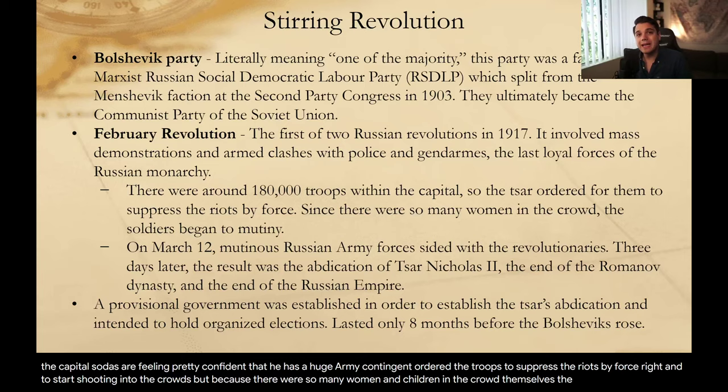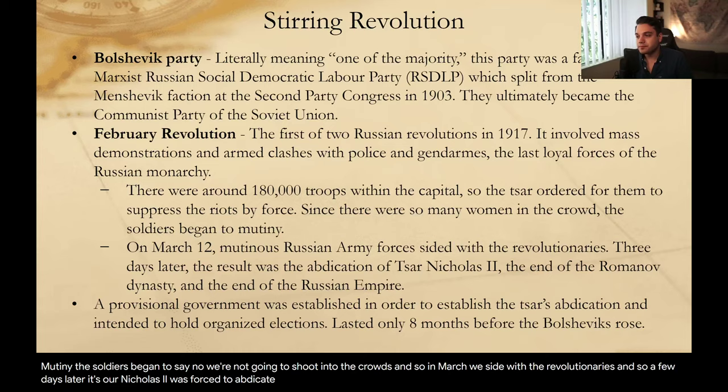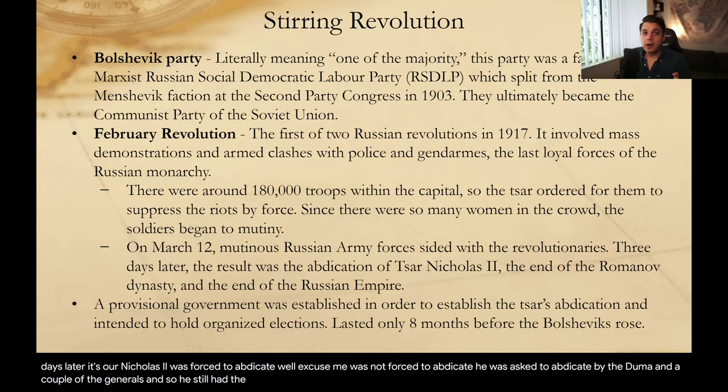But because there were so many women and children in the crowd themselves, the soldiers began to mutiny — the soldiers began to say no, we're not going to shoot into the crowds. In March, we start having mutinous Russian forces siding with the revolutionaries. A few days later, Tsar Nicholas II was asked to abdicate by the Duma and a couple of the generals.